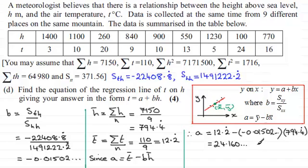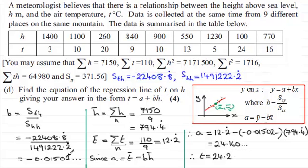We know that the regression line of t on h has the form t equals a plus b h, so therefore we can say that t equals a. Now I'm going to give my answers to three significant figures. So this is going to be 24.2. And then it's plus b times h. b is a negative value, so that's going to be minus 0.0150 to three significant figures. And then that's multiplied by h.